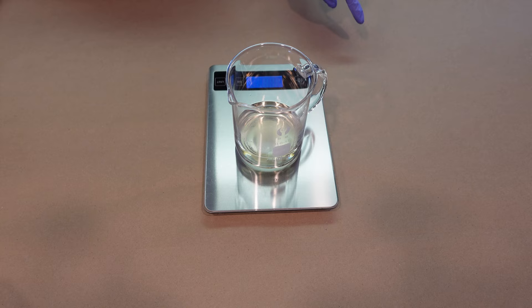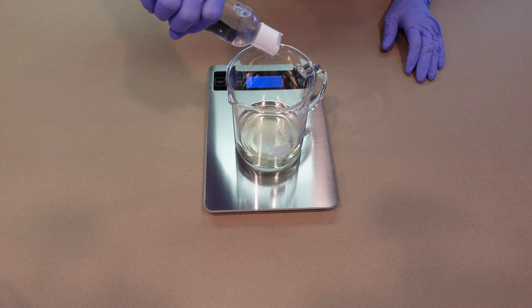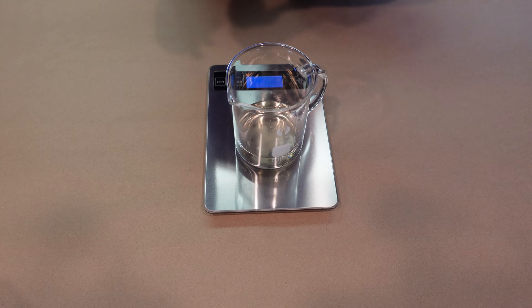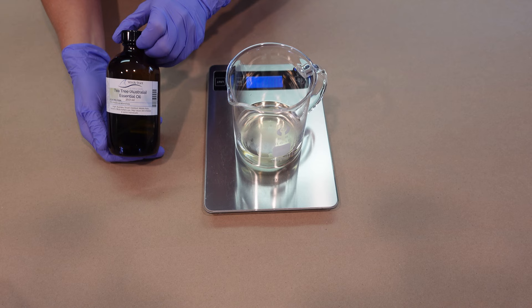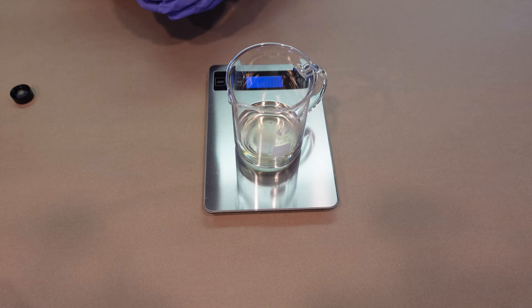Next up in the water phase here is going to be our preservative and then our essential oil. For our preservative, we're going to be using Liquid Germall Plus because it's great for watery type formulas and it's a broad spectrum preservative. The essential oil that we're adding in is tea tree.